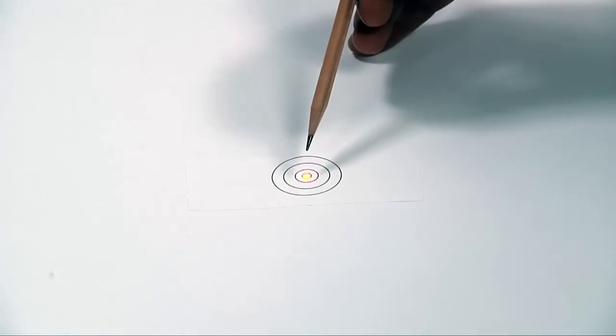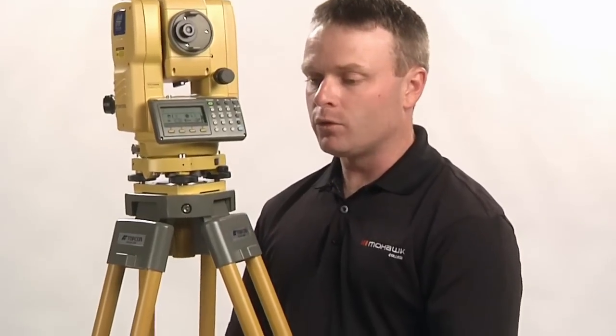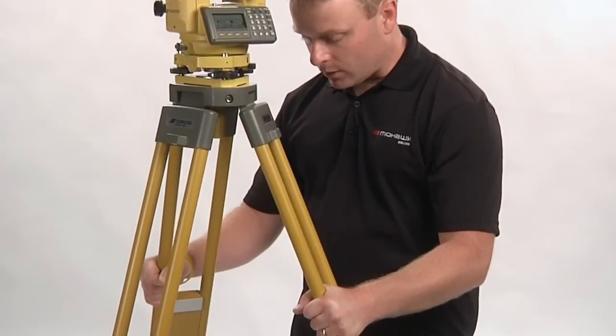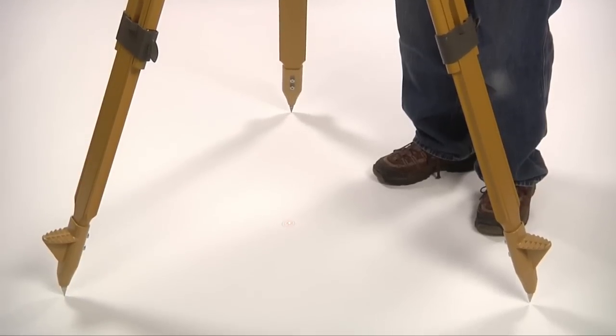In the field, the laser will be much more visible. To center the laser plummet over the point, pick up two of the legs of the tripod and jockey the legs around to get the laser as close to center as you can get it.